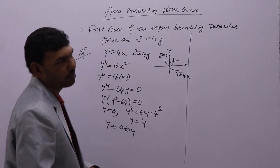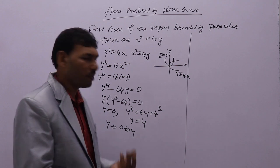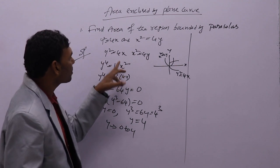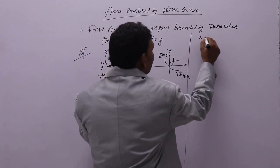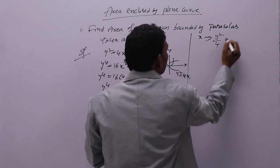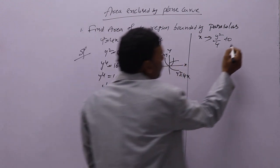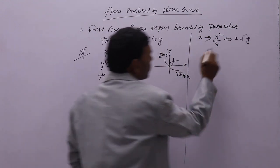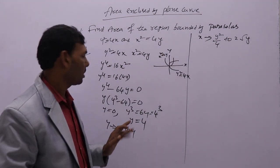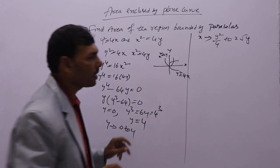Next we need to find x limits. If one variable's limits are constant, the other variable's limits will be in terms of that variable. Since y limits are constant (0 to 4), x limits will be in terms of y. From the equation y squared equal to 4x, we get x equal to y squared by 4. From x squared equal to 4y, we get x equal to 2 root y. So x limits are from y squared by 4 to 2 root y. We will now evaluate the area of the region enclosed between these two plane curves.